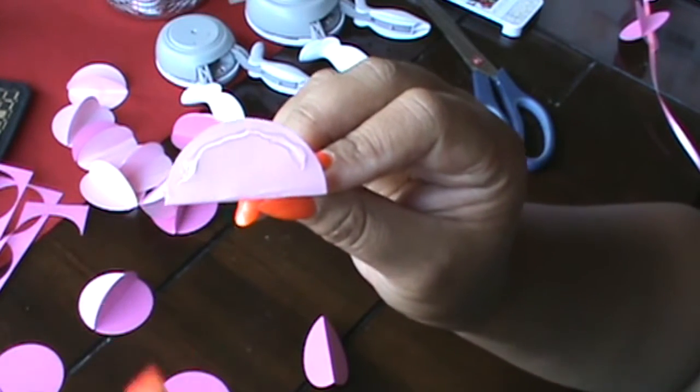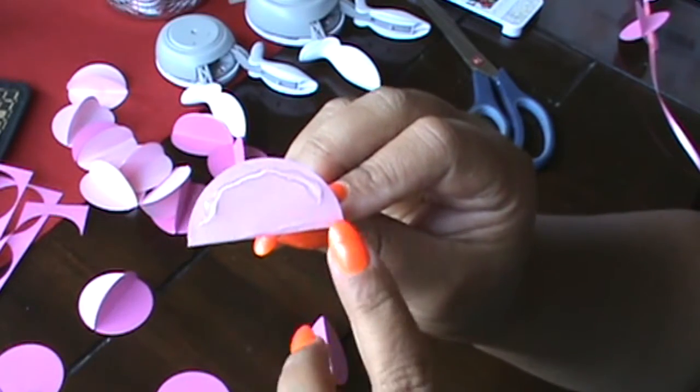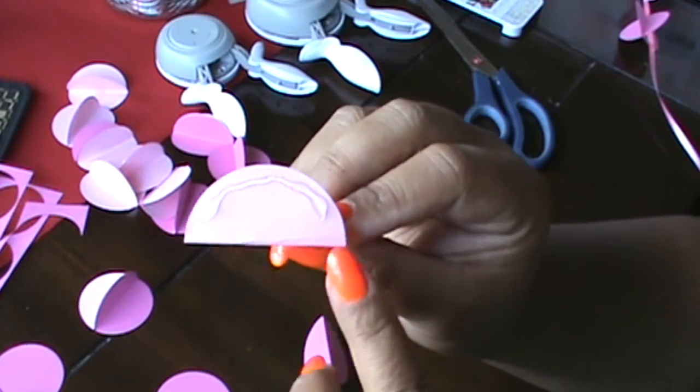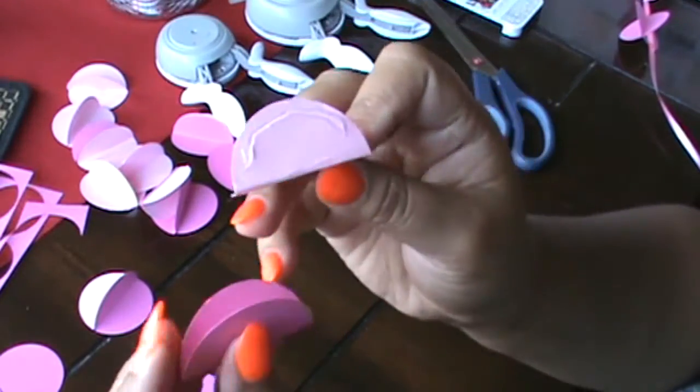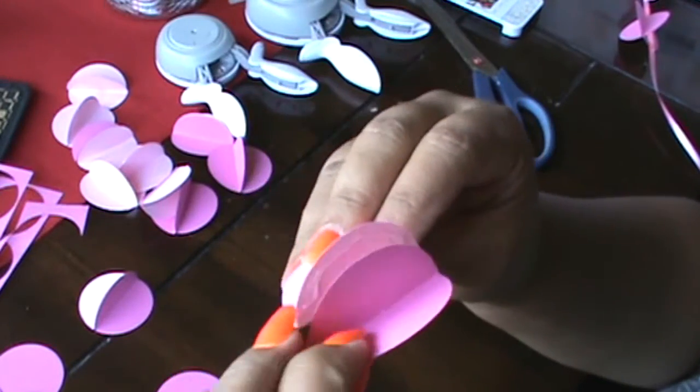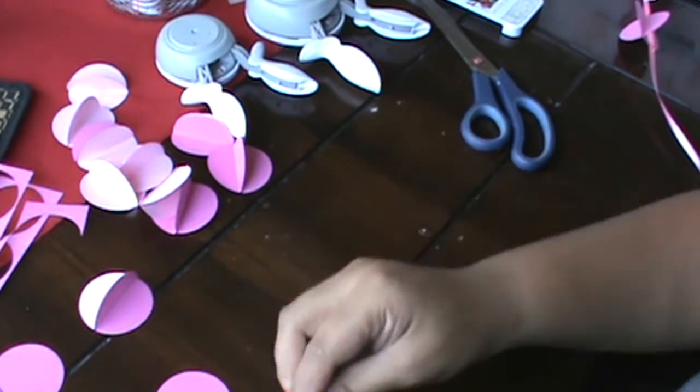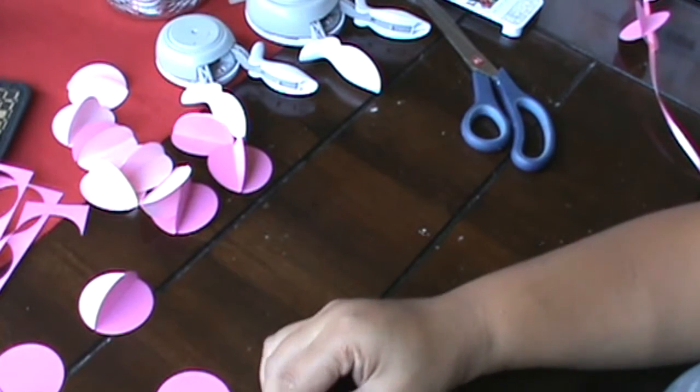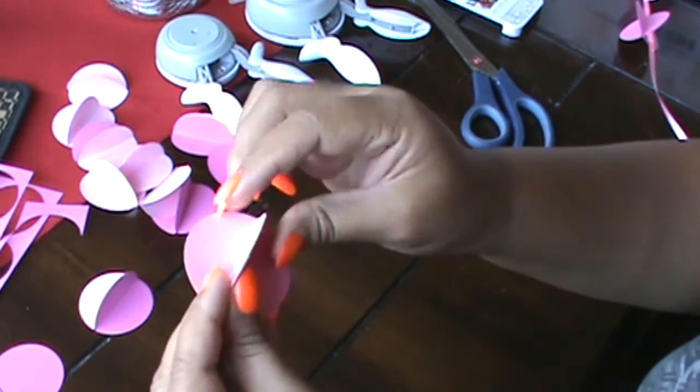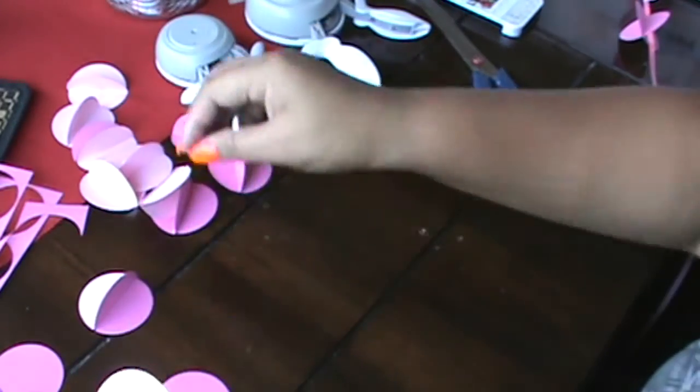So you're gonna leave this part with no glue, okay, because our ribbon is gonna go there. So we don't want to seal it completely. Take the other side and just mash them together.